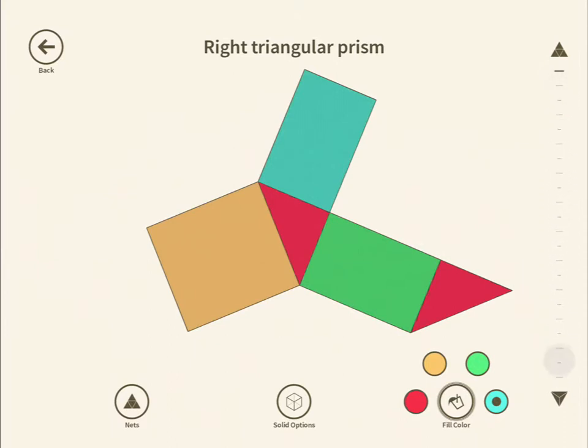And provided we've got all the dimensions, these are just three rectangles, different dimensions, and we know how to find the area of a triangle.